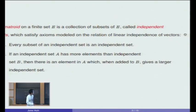Property one: every subset of an independent set is an independent set. Property two: we have the exchange axiom, which says that if you have two independent sets and one is larger than the other, then there is an element in the larger independent set which, when added to the smaller independent set, gives a larger independent set.